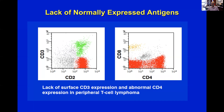The fifth thing tumors do — usually the hardest to differentiate from reactive changes — is show a lack or a higher expression of normally expressed antigens. Here is a T cell population that has dropped CD3. Here is a T cell population that instead of being single CD4-positive has a significant subset that is double negative, probably having dropped CD4. Tumors do really unusual things with antigen dropping, or in some cases they can be too bright — like CD10 in ALL. This one requires intimate knowledge of a particular lab's staining patterns and fluorochromes to determine what is brighter or dimmer than usual.